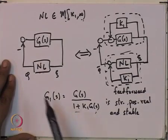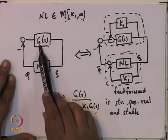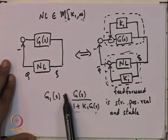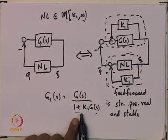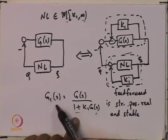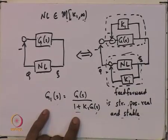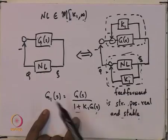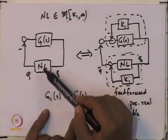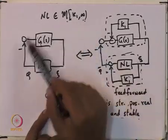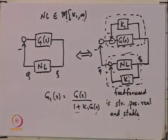The result is: if you take any plant and do this transformation, this transformation of the plant should result in the new plant G1 being strictly positive real and stable. If that is true, then the original plant G with the nonlinearity in the K1-infinity sector is going to give you asymptotic stability.